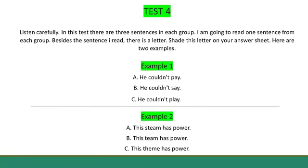Test 4. Listen carefully. In this test, there are three sentences in this group. I'm going to read one sentence from this group. Beside the sentence I read, there's a letter. Shade this letter on your answer sheet. Here are two examples. Example 1. He couldn't play. The sentence I read was sentence C, he couldn't play. So the correct answer for example 1 is C. It's recorded by shading answer space C against number 1.